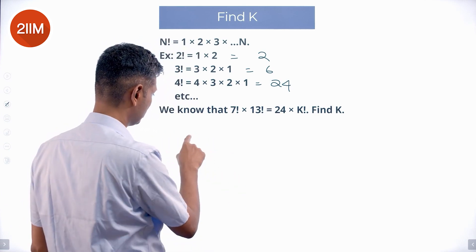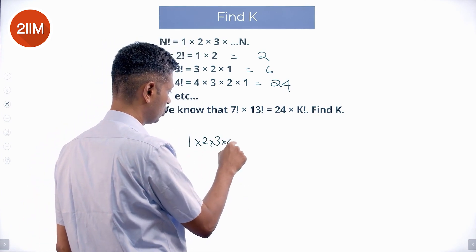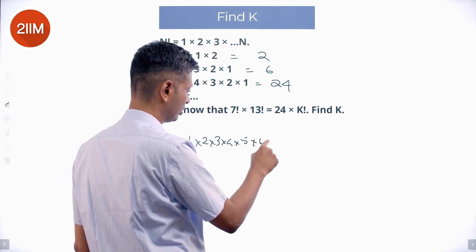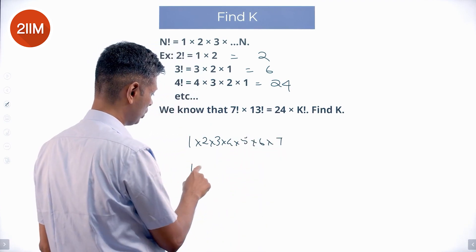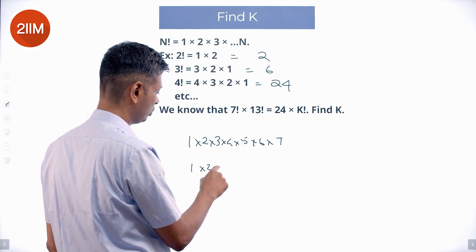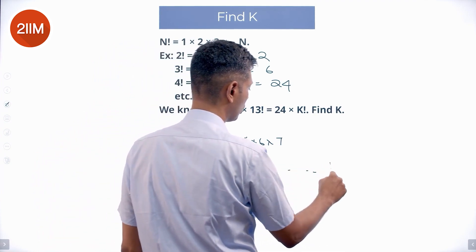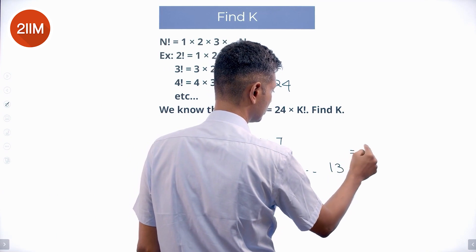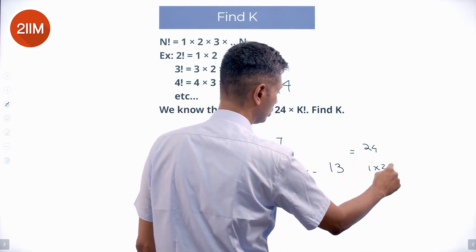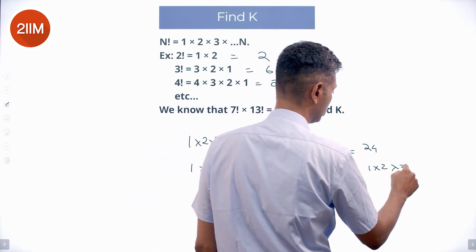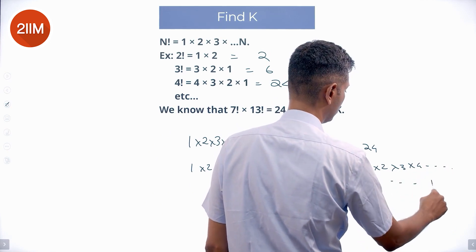7 factorial is 1 × 2 × 3 × 4 × 5 × 6 × 7. 13 factorial is 1 × 2 × 3 × 4 all the way to 13. And 24 times k factorial is 1 × 2 × 3 × 4 all the way to k, multiplied by 24.